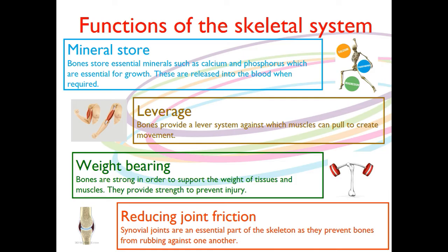The next one is weight bearing. Bones are strong in order to provide support for the weight of our body's tissues and muscle. They provide strength, which helps us to prevent injury. Think about every time you're running — all of your body weight is going through that one foot on the ground. If you bowl in cricket, you can get up to seven times your body weight going through your ankles, and that's why sometimes bowlers get injured. It's amazing how much force your bones can take. So weight bearing is that seventh one.